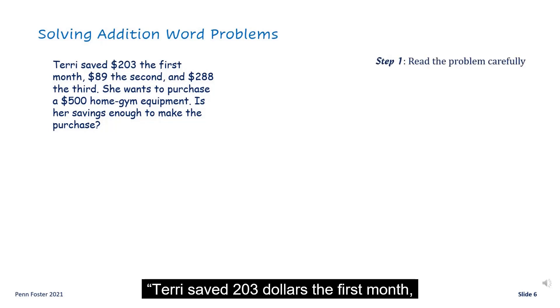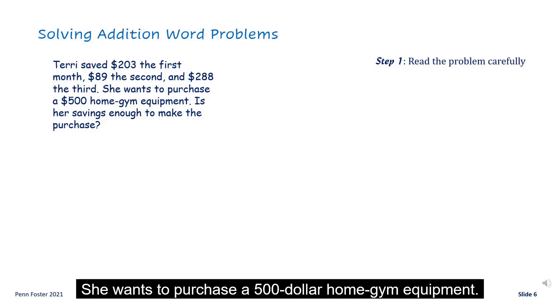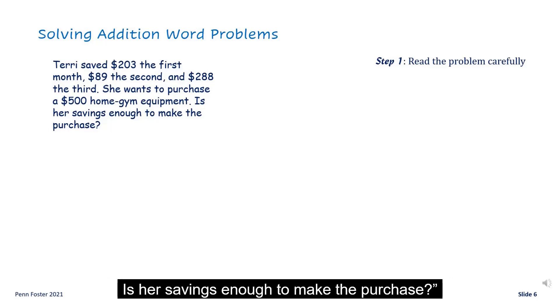Terry saved $203 the first month, $89 the second, and $288 the third. She wants to purchase a $500 home gym equipment. Is her savings enough to make the purchase?